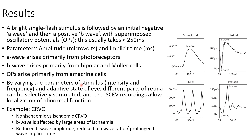By varying the parameters of stimulus, that is intensity and frequency, and the adaptive state of the eye, different parts of the retina can be selectively stimulated, and the ISCEV recordings allow localization of abnormal function. For example, ERG is useful in CRVO — it is useful in differentiating non-ischemic from ischemic CRVO. In ischemic CRVO, the B wave is affected by large areas of ischemia, so there will be reduced B wave amplitude, reduced B-to-A wave ratio, or prolonged B wave implicit time.